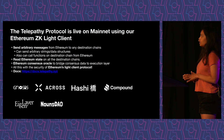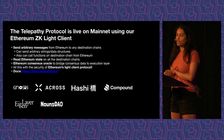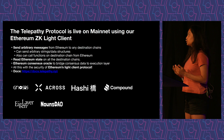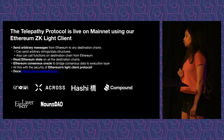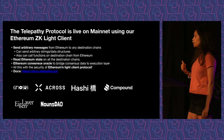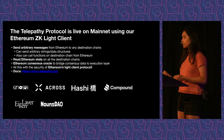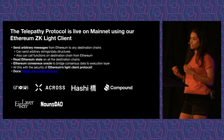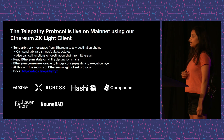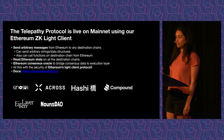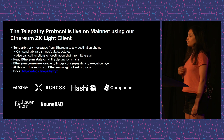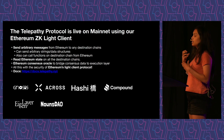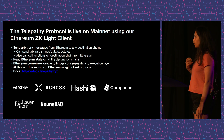Our first protocol, Telepathy, is currently live on mainnet — it's been live since March. It uses our Ethereum ZK light client. With this, you can do a few things. The first is you can send messages from Ethereum to any chain that has our light client running on it. Our light client running on another chain has access to Ethereum's block header, and with that block header you can verify whether or not a message was sent on Ethereum — so you can send messages from Ethereum to other places.